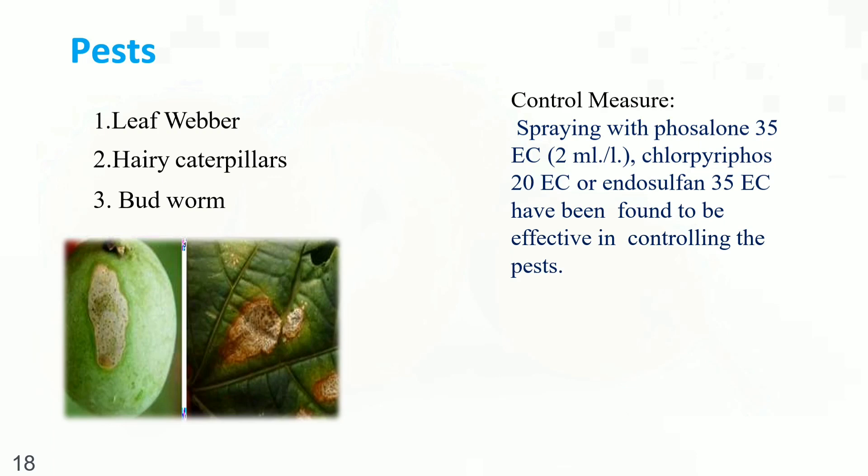Pests include leaf webber, hairy caterpillars, and bark borer. Control measures: Spraying with Phosphamidon 35 EC at 2 ml per litre, or Chlorpyrifos 20 EC or Endosulfan 35 EC has been found to be effective in controlling these pests.